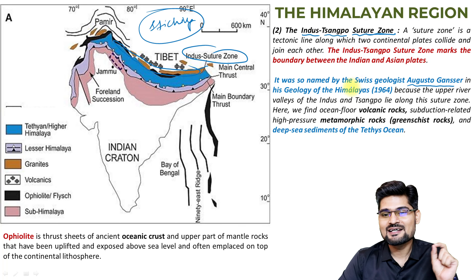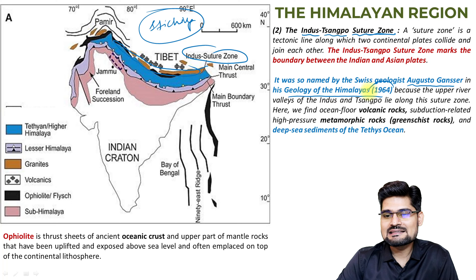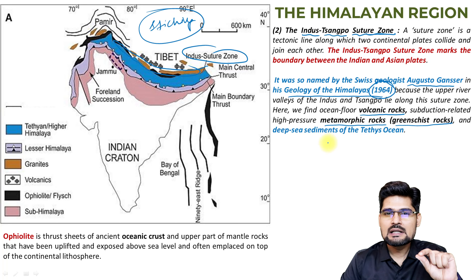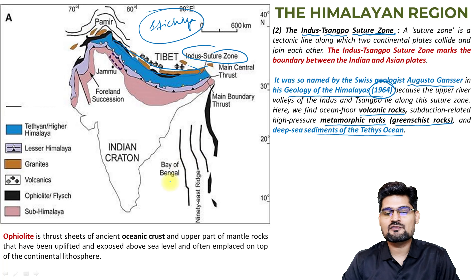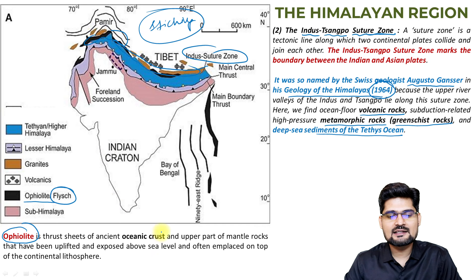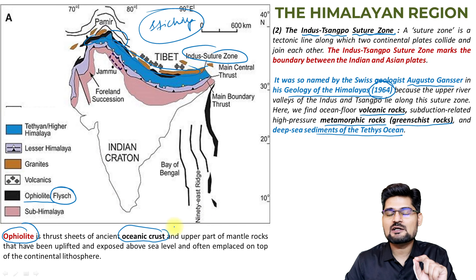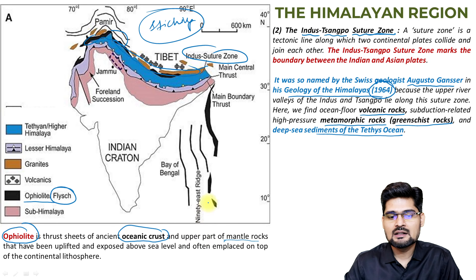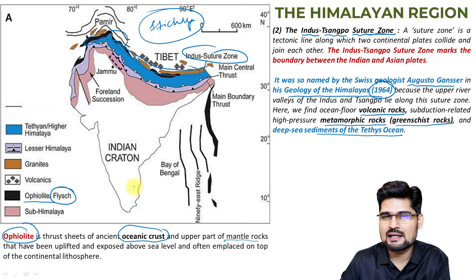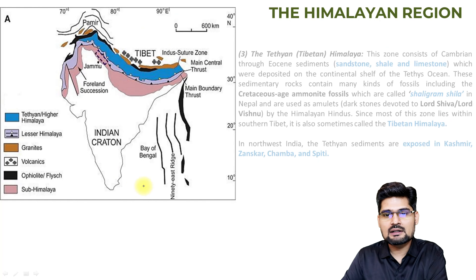Gansser says this zone contains volcanic rocks, metamorphic rocks, and green schist rocks. It also has deep-sea sediments of the Tethys Ocean, with a lot of fossils. In this part of the Himalaya, you will see ophiolites — the black-colored deposits on the map, which are oceanic crust with upper mantle depositions. These are called ophiolite or flesh deposits.